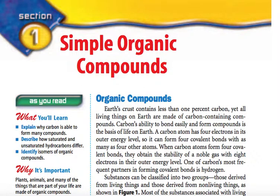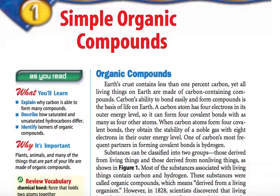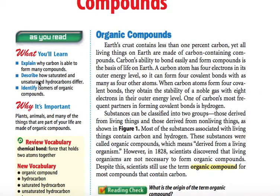Chapter 9 Lesson 1: Simple Organic Compounds. Here are our objectives: Students will explain why carbon is able to form so many different compounds. We'll describe how saturated and unsaturated hydrocarbons differ, and we will identify isomers of organic compounds.